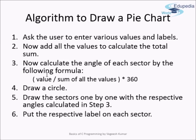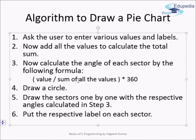You calculate the angle of each sector using the formula: value divided by the sum of all values, multiplied by 360. Then you draw the circle on screen and draw the sectors one by one using those calculated angles. Finally, you place the respective label on each sector — for example, 'boys count' on the boys sector and 'girls count' on the girls sector. That is a basic algorithm example and the problem is solved.